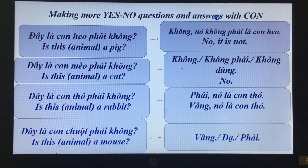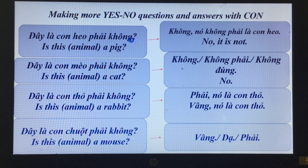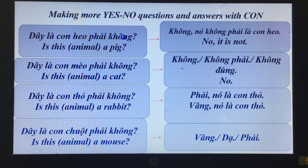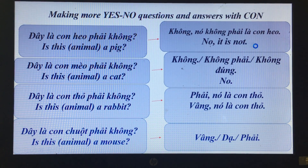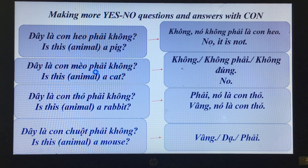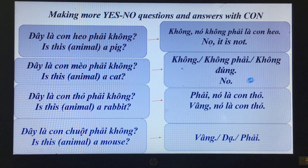'Đây là con heo phải không?' — Is this animal a pig? 'Không, nó không phải là con heo.' — No, it's not. 'Đây là con mèo phải không?' — Is this animal a cat? 'Không, không phải, không đúng.' — No.